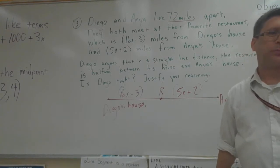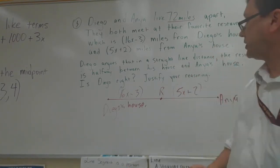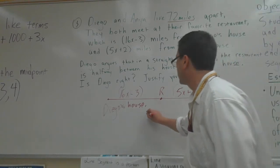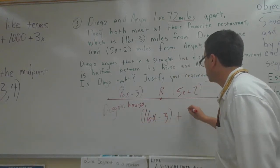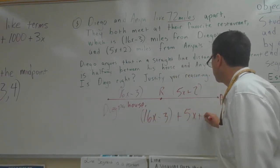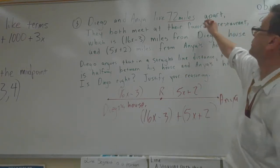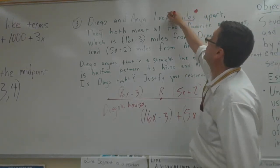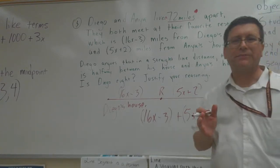So what I'm going to do is go right to the crux of the matter which is 16x minus 3 plus 5x plus 2 equals 72. Equals 72. So that's 72 miles.